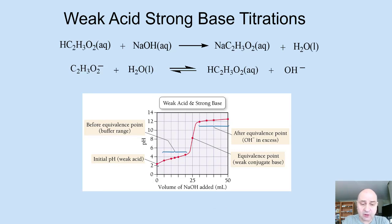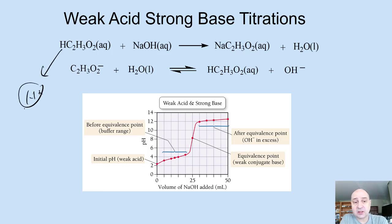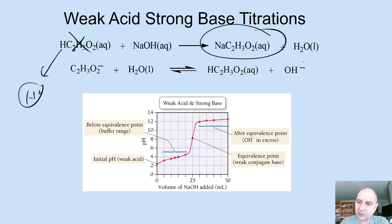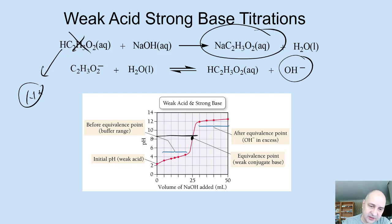This is a titration curve of a weak acid with a strong base. Initially you have a low pH because acetic acid gives off some H⁺. As you add the base, the equilibrium shifts to the right, and when the acid is completely depleted you have sodium acetate, which pushes the pH up. At the endpoint, the pH looks like almost 9, and we can calculate that.